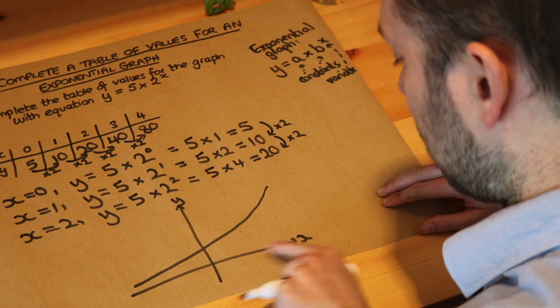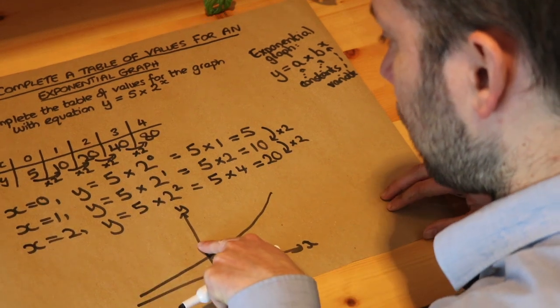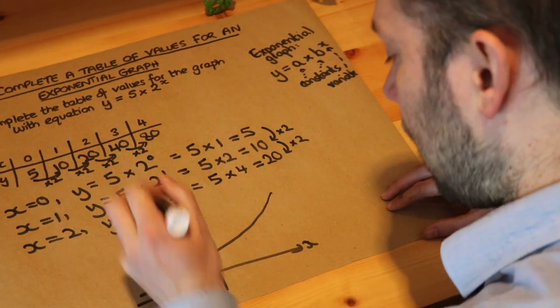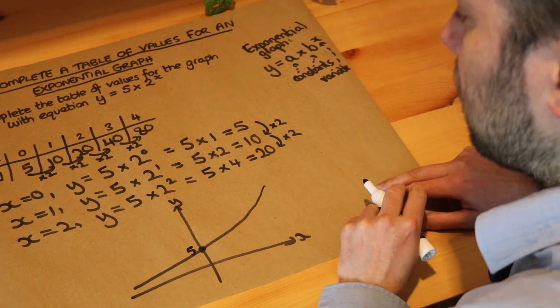And if we wanted to plot the y, well when x is zero, x is zero here. When x is zero, y is five, so zero five would be there. So it has a y intercept of five.